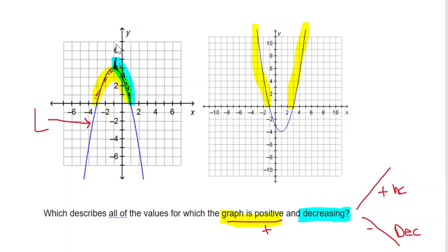Our y values are positive and our y values are decreasing from the vertex at negative 1 all the way until you get to the x-intercept of positive 1. So that would be all of the values from the vertex to positive 1.